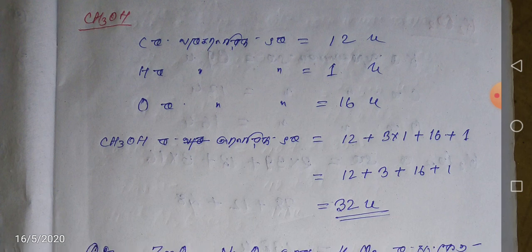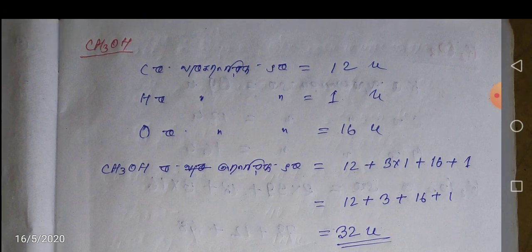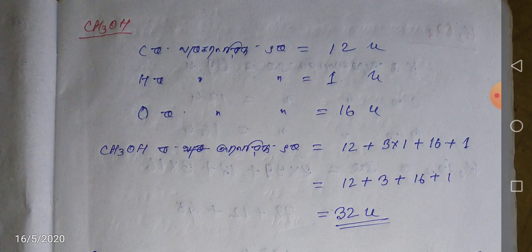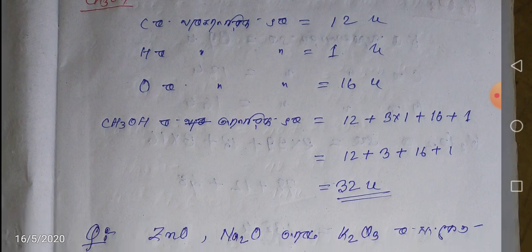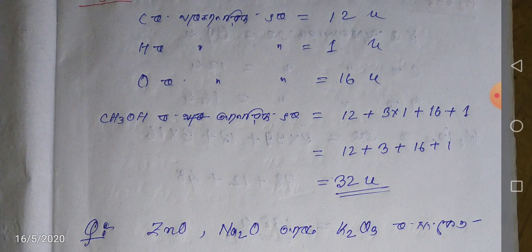If you like carbon, hydrogen, oxygen — I can do CH3OH. Carbon is equal to 1, hydrogen is equal to 4, oxygen is equal to 1. CH3OH is equal to 12, plus 3 into 1, plus 16, plus 1 — so the answer is 32.